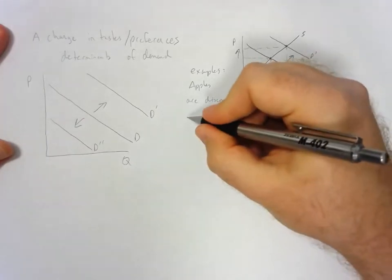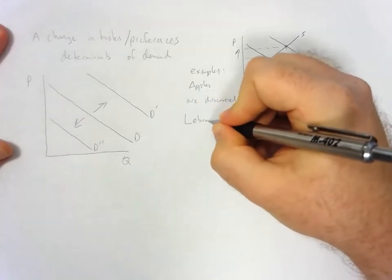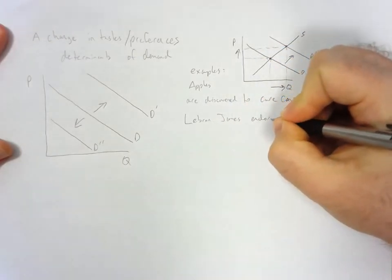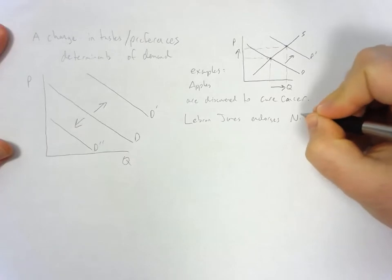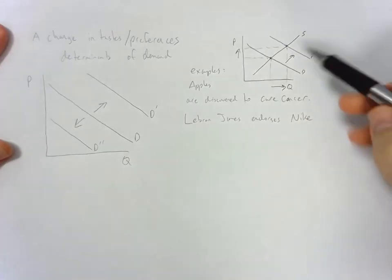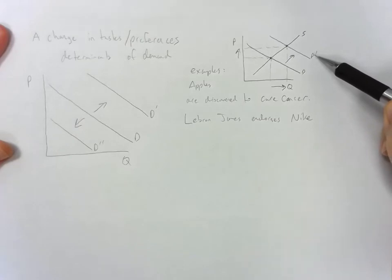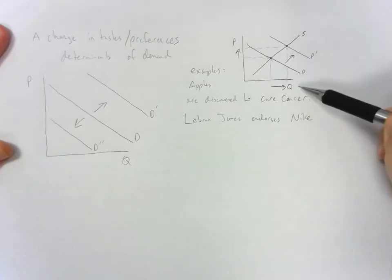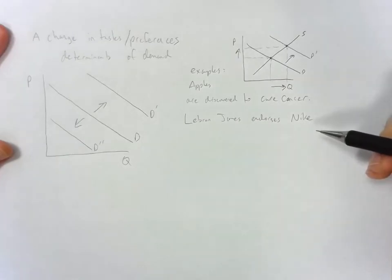What's another example? Let's say LeBron James endorses Nike. Again, we would imagine the tastes and preferences for Nike products to go up. This will cause the equilibrium price to go up, and the equilibrium quantity to go up as well.